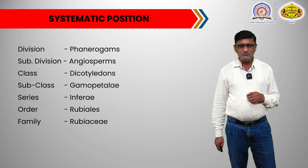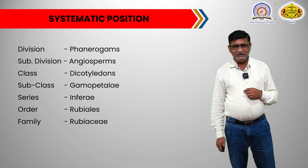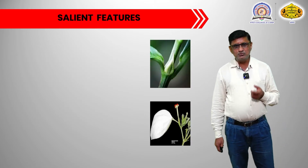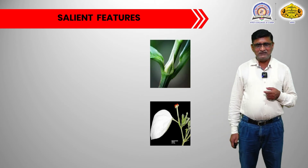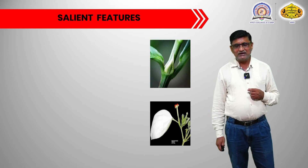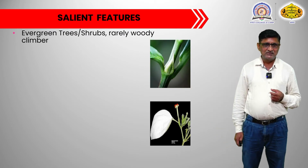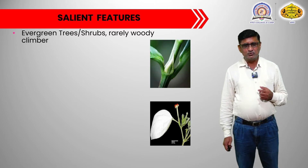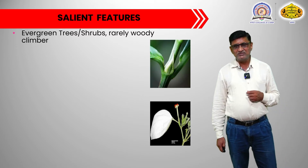Then order Rubiales because the leaves are simple, opposite, and entire. Then family Rubiaceae — the leaves are simple, opposite, decussate or whorled, and they show the presence of interpetiolar stipules. Because of these characteristic features, this family is classified into family Rubiaceae. Now we will go for the study of the salient features.